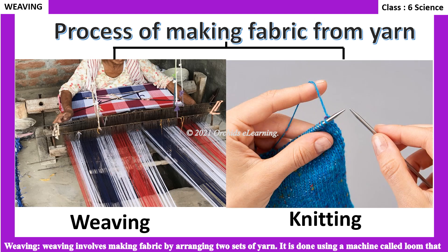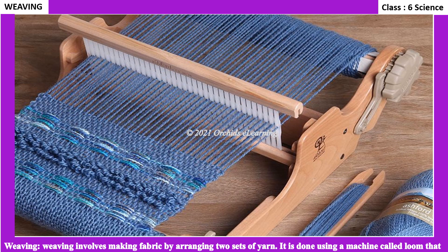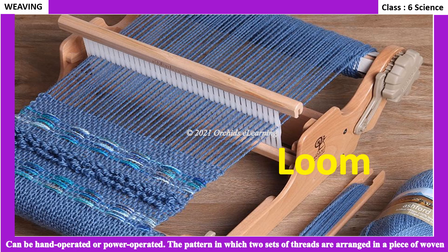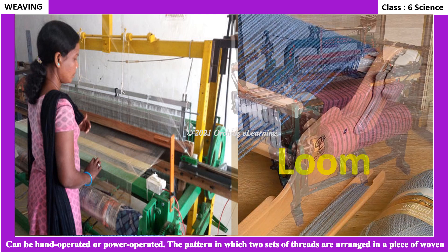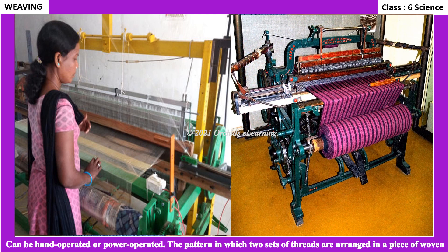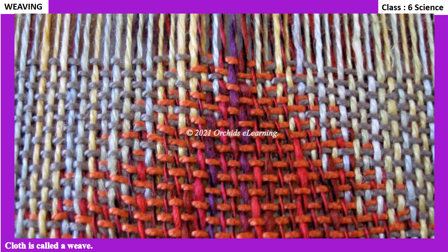Weaving involves making fabric by arranging two sets of yarn. It is done using a machine called a loom, which can be hand-operated or power-operated. The pattern in which two sets of threads are arranged in a piece of woven cloth is called a weave.